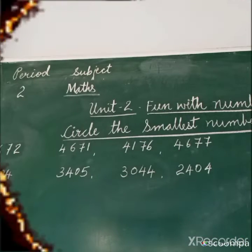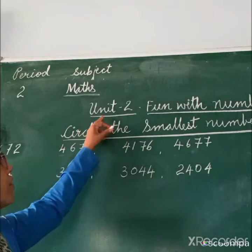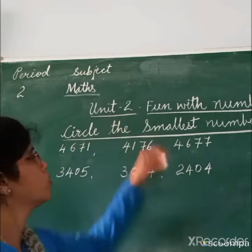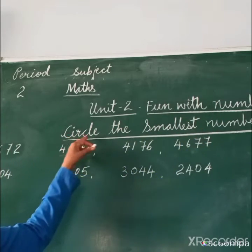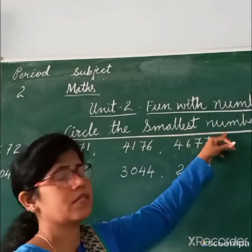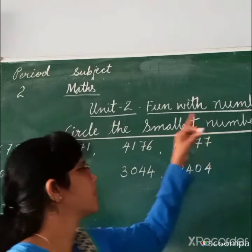Hello college students, let us start our class. Do the revision. Unit 2, one is numbers. Topic is circle the smallest number. What is the topic? Circle the smallest number.